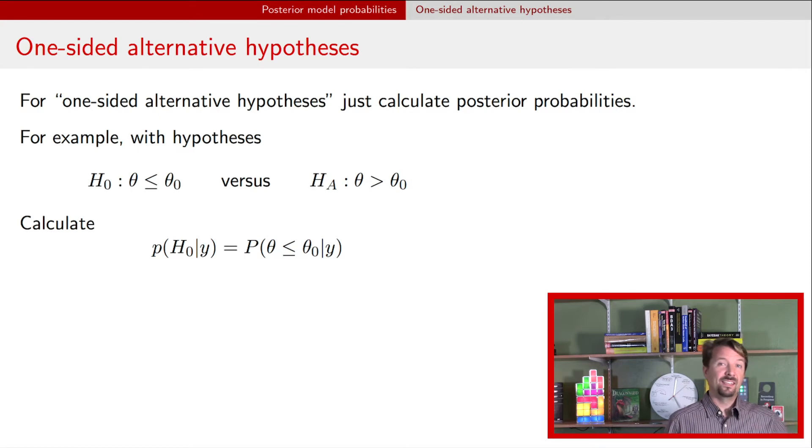We can calculate the alternative hypothesis or the probability that it's true just by doing the same kind of thing but now we're taking the probability that theta is greater than theta naught.